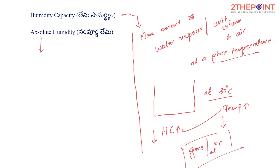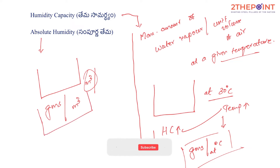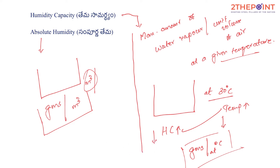Absolute humidity at a particular temperature is the amount of moisture — the grams of water vapor — that a unit volume of air, a cubic meter of air, has at a given point in time at a given temperature. The amount of water vapor present is the absolute humidity. Let's say 10 grams — that is the absolute humidity. It tells us the amount of moisture in one particular unit volume of air at a particular time.